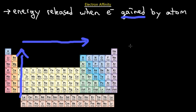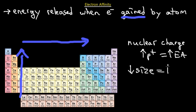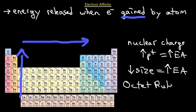The most important factors for electron affinity are nuclear charge — more protons on the right side means higher electron affinity — atomic size, where a lower atomic size gives higher electron affinity, and the number of valence electrons, where the octet rule plays the same role as it did for ionization energy.